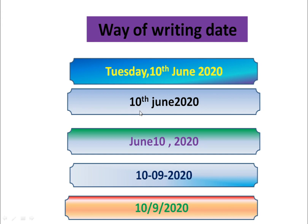The second way of writing the date is to mention the ordinal number of the date first, then the month, then the year. When writing the month, use a capital letter. Similarly, you can write the month first, then the date, then the year. When writing the date in cardinal numbers — ten, eleven, twenty, twenty-one — you have to separate the year and the date with a comma. We can follow any one of these ways of writing the date.